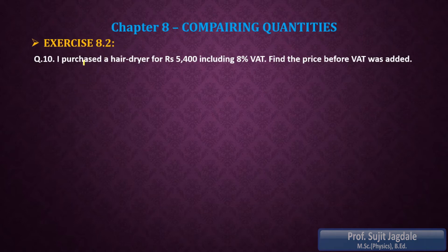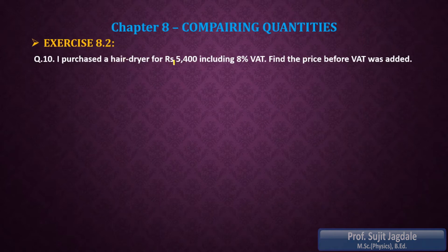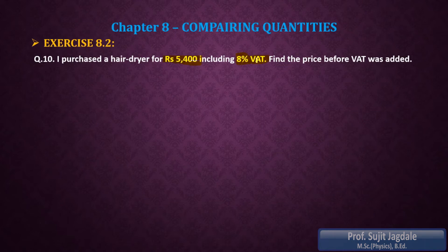After this we are going to start the next exercise, which is exercise 8.3. Now we will see example number 10. I purchased a hair dryer for Rs 5400 including 8% VAT. VAT means value added tax, which is 8%, and including that VAT the purchased hair dryer is for Rs 5400.